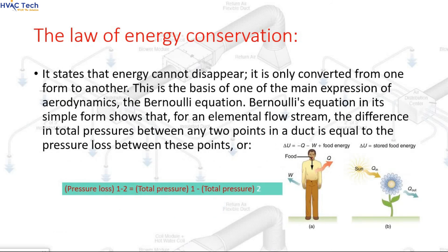The law of energy conservation states that energy cannot disappear; it is only converted from one form to another. This is the basis of one of the main expressions of aerodynamics: the Bernoulli equation. Bernoulli's equation in its simple form shows that, for an elemental flow stream, the difference in total pressures between any two points in a duct is equal to the pressure loss between these points: Pressure Loss (1 to 2) = Total Pressure 1 − Total Pressure 2.